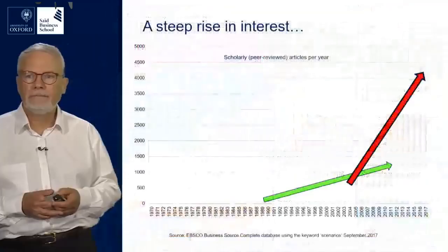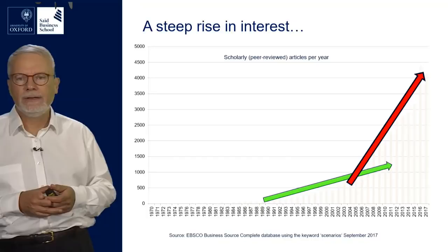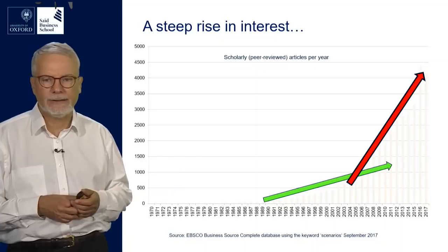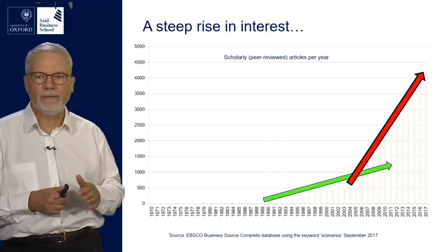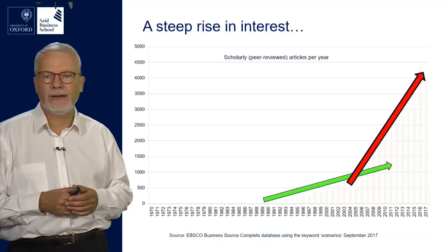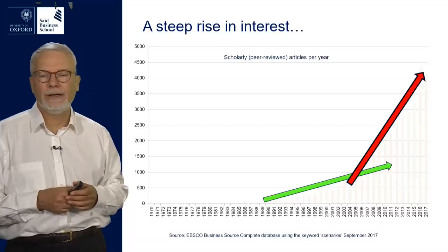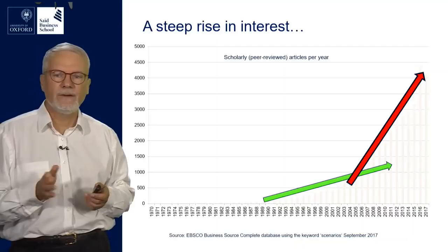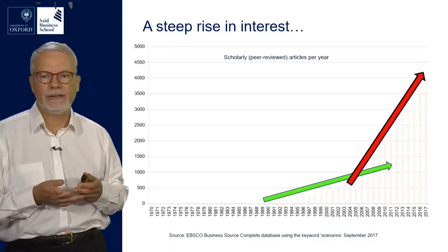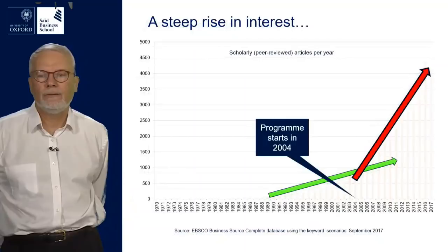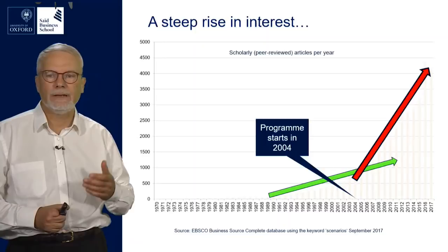The history of scenario planning is shown in this diagram. On the vertical axis you see the number of peer-reviewed publications in English, and on the horizontal axis you see the number of years. There were a reasonably small number of articles published per year in scenario planning until about 2003-2004. Then the activity took off and now there are over 4,000 articles published in English alone in scenario planning in the literature. We believe that the reason for this shift was 9/11, the financial crisis, Brexit, the Middle East complexities, globalization, the Trump election, and so on. We started the program right at the time that scenario planning became a major part of the strategy field.